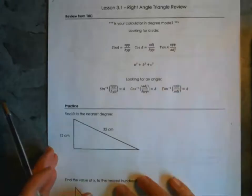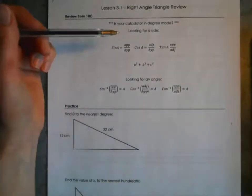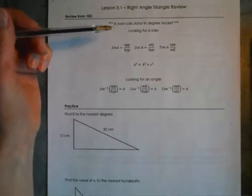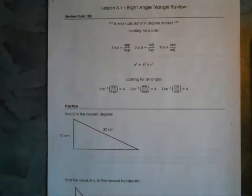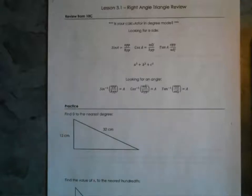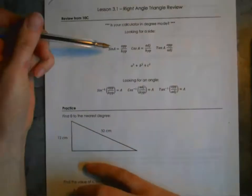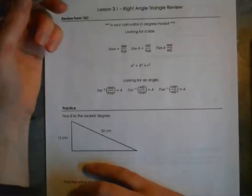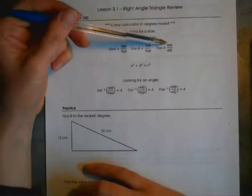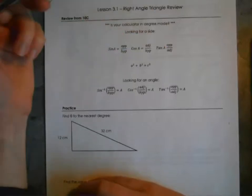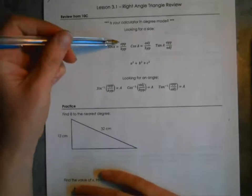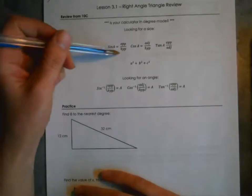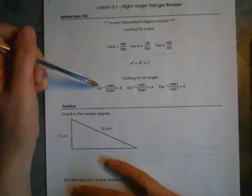The other things to remember are what you might know as SOH-CAH-TOA. We have three trig functions used to solve for sides and angles in right angle triangles. Sine of angle A equals the opposite side over the hypotenuse, cosine is adjacent over hypotenuse, and tan is opposite over adjacent.